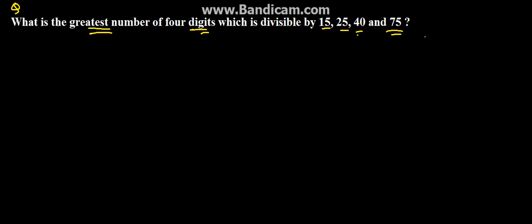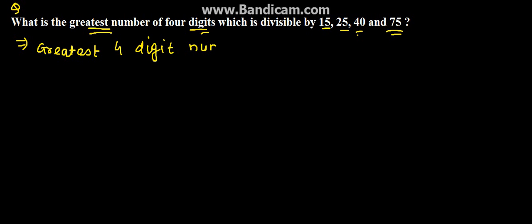We need to find the greatest 4-digit number which is divisible by these 4 numbers. So first, the greatest 4-digit number is equal to 9999. This is the greatest 4-digit number.